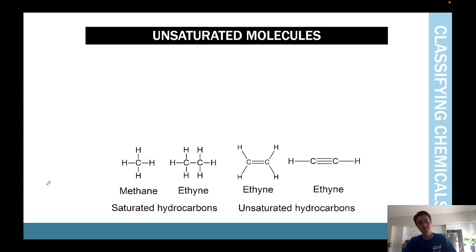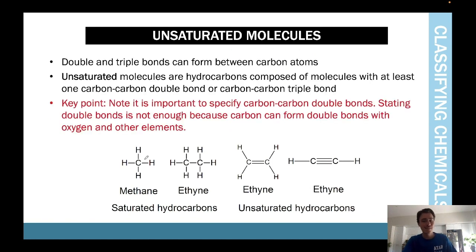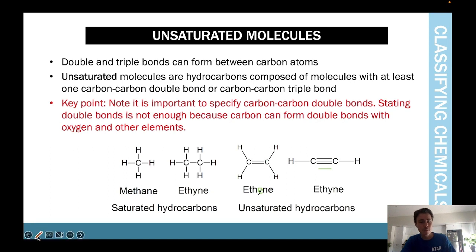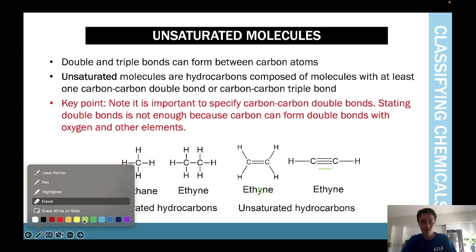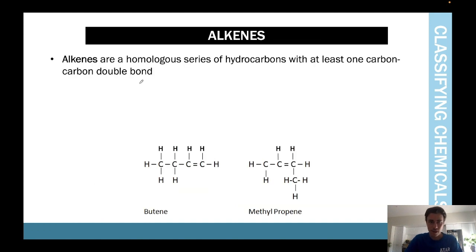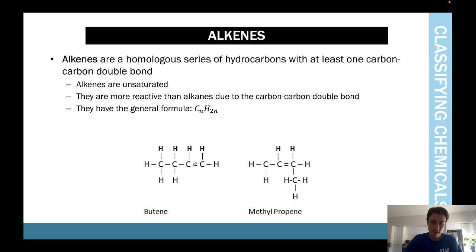Unsaturated molecules are molecules with a double or triple bond. Alkenes are the same as alkanes but with a double bond. Because of the double bond, two hydrogens are lost, giving the general formula CnH2n.